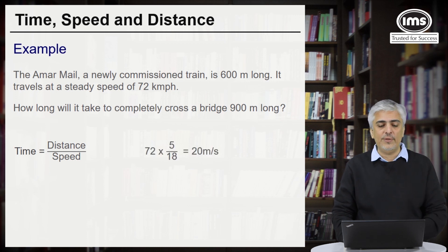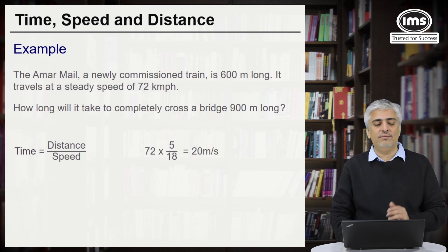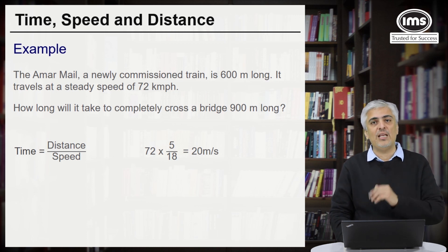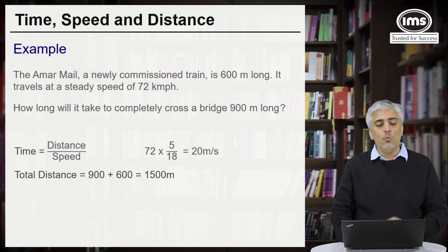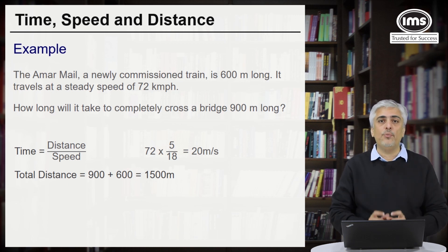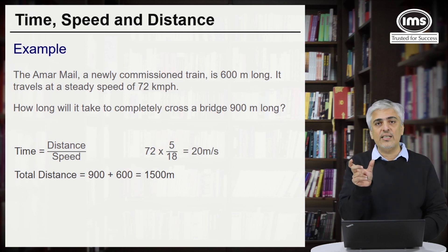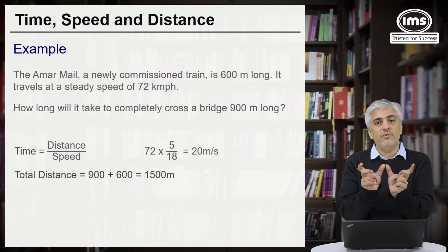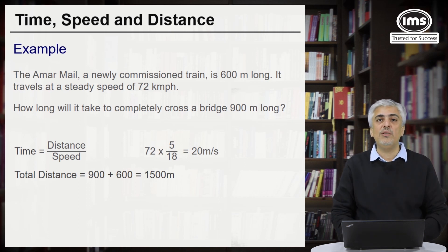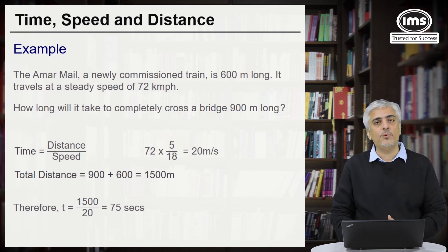Time is distance divided by speed. We convert 72 km per hour to meter per second by multiplying by 5/18. The total distance is 900 plus 600 — that is the important part. The length of the train, 600, plus the bridge, 900, both are considered, giving a total distance of 1500 meters. Time taken = 1500 divided by 20 = 75 seconds.